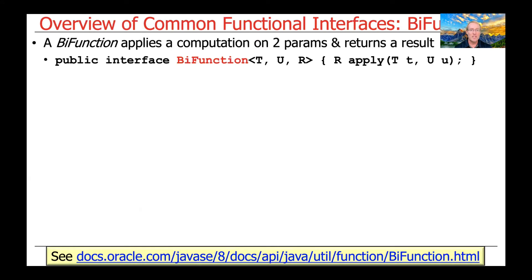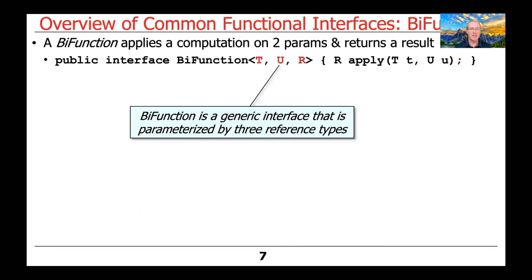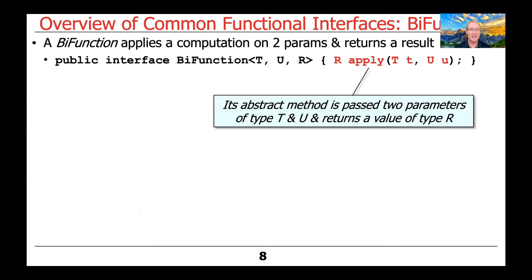So what's a BiFunction? A BiFunction can be used to apply a computation on two parameters and return one result. BiFunction is an interface in modern Java that takes three reference types as generic parameters, and they're used as follows in the apply abstract method.